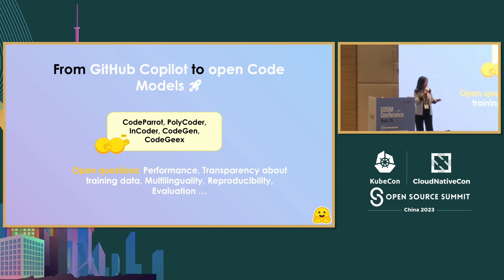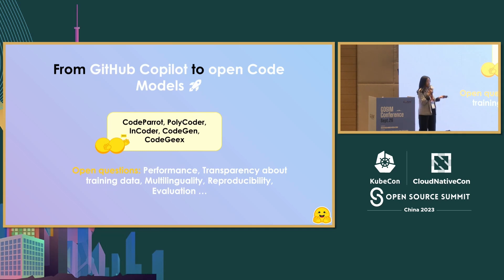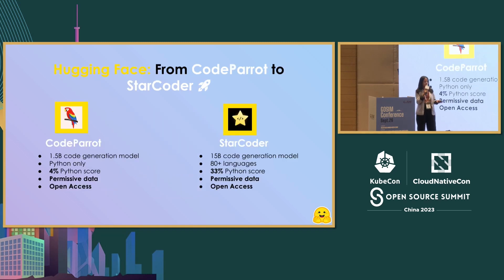This is why there are a lot of open questions. These questions are related to performance — getting good performance not just on Python, but also on other programming languages — and also about transparency regarding the training data: which data did the authors use, and is there a way for someone to opt out if they don't want to be included in the training? There are also questions about the evaluation of these models. At Hugging Face, we tried to start training models like this and do so in an open way.